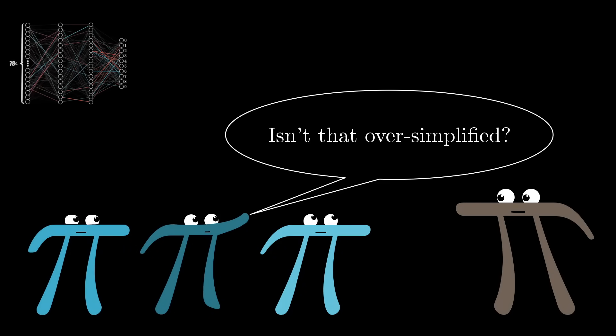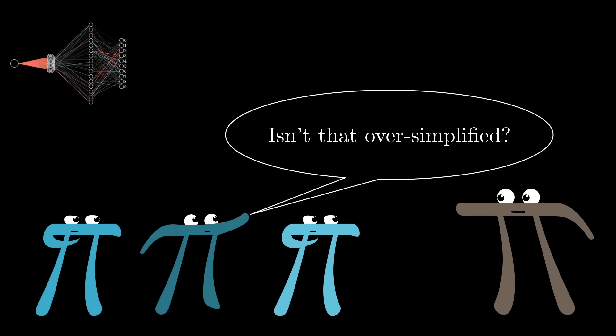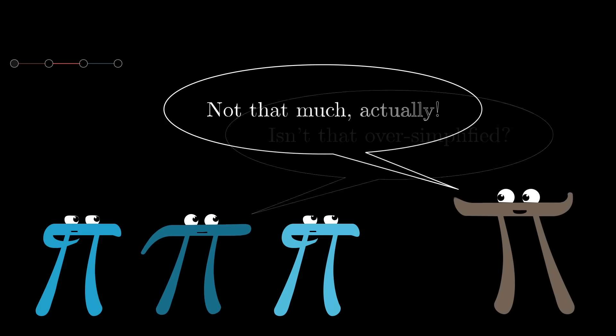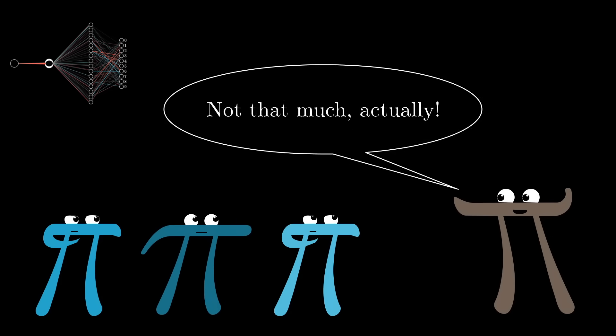And you might think that this is an overly simple example, since all layers just have one neuron, and that things are going to get exponentially more complicated for a real network. But honestly, not that much changes when we give the layers multiple neurons, really it's just a few more indices to keep track of.